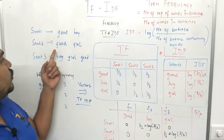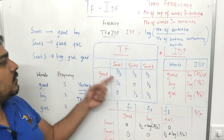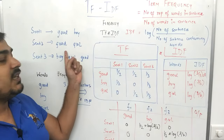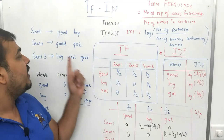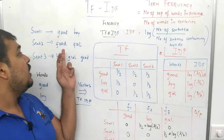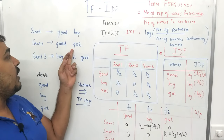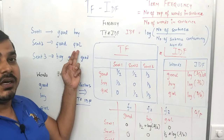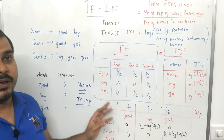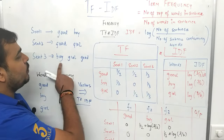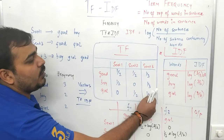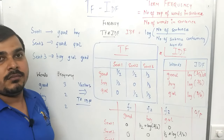For sentence two, I have 'good' and 'girl'. Good is one by two because I just have two words, and girl is also one by two — the total number of words are two and girl is present once. For sentence three — boy, girl, good — I can write one by three, one by three, one by three for good, boy, and girl respectively. This is how easily we calculate term frequency.